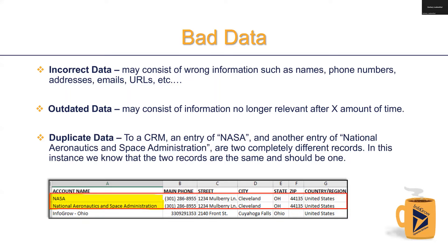Looking at the example at the bottom of the slide, there's a CRM entry of NASA and another of National Aeronautics and Space Administration — these are two completely different records. But if you look closely, you'll see that they're actually the same record and should be a single record. This is just one instance of how duplicate data can occur. We recommend devising proper naming conventions inside your CRM to help prevent duplicates like this from occurring.